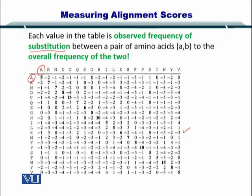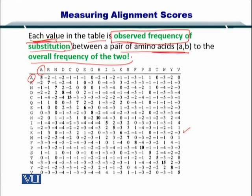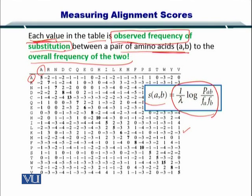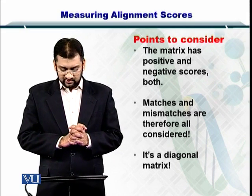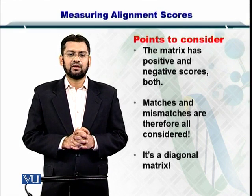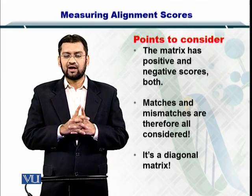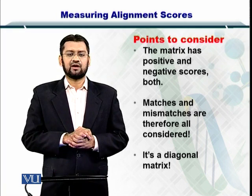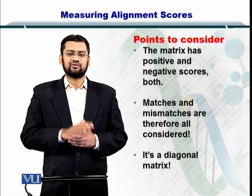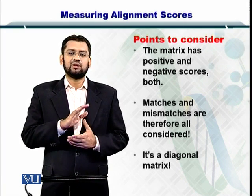This substitution matrix has several values, and each value in the table is the observed frequency of substitution between a pair of amino acids relative to the overall frequency of the two. The matrix has both positive and negative scores — a positive score indicates a match, and a negative value is essentially a mismatch score. Because all mismatches and matches are considered, this is a diagonal matrix, and the upper diagonal is symmetrical to the lower diagonal.